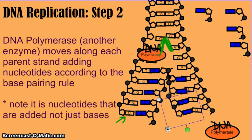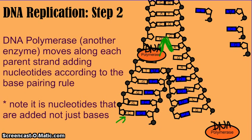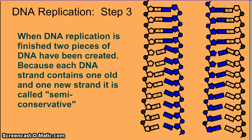This process simply continues on, and we see two strands forming from one. Step three: in step three, we have two strands of DNA.